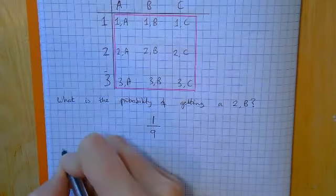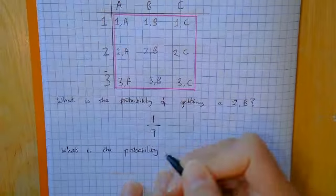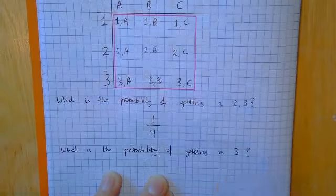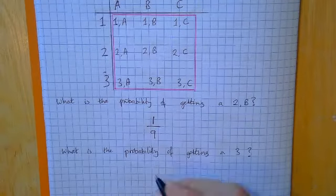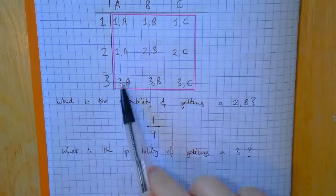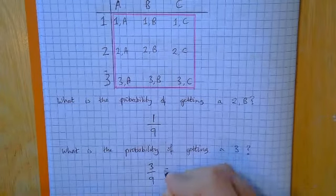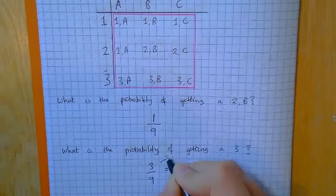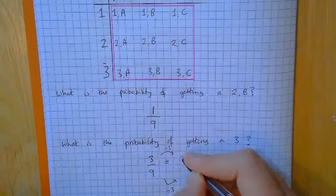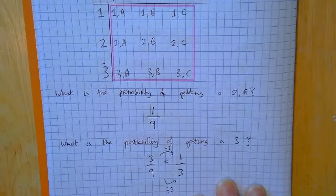Let's look at one more probability question. What is the probability of getting a three? Two questions again: how many outcomes altogether? Nine — that hasn't changed. How many times does the number three appear? One, two, three — it appears three times, so we get three ninths. We can simplify this fraction: divide top and bottom by three, giving us one third.